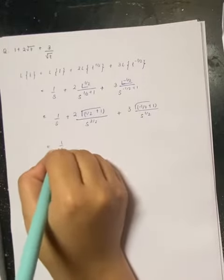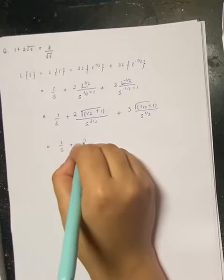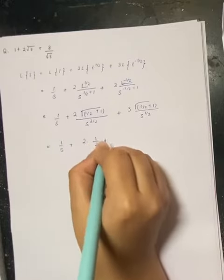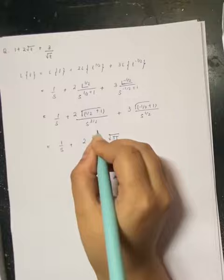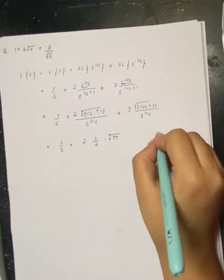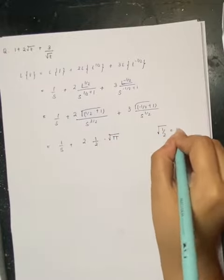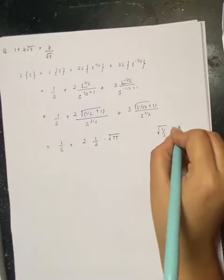This will be equal to 1 by s plus 2 into gamma of 3 by 2 by s to the power 3 by 2 into root pi, because gamma of half is equal to root pi.